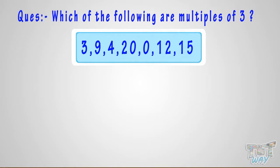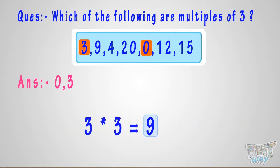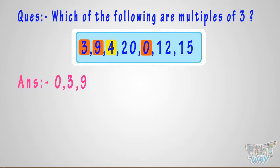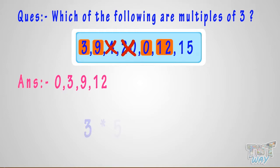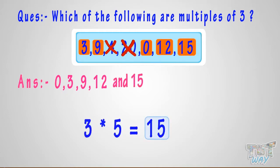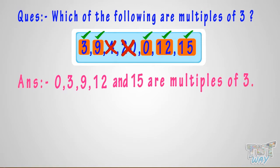Which of the following are multiples of 3? We know 0 and the number itself are always multiples of a number, so 0 and 3 are multiples of 3. 9 comes in the table of 3, so 9 is a multiple of 3. 4 does not come in the table of 3, so it's not a multiple. 20 also does not come in the table of 3. 12 comes in the table of 3, so it's a multiple of 3. 15 also comes in the table of 3, so 15 is a multiple of 3. So, 0, 3, 9, 12, and 15 are multiples of 3.